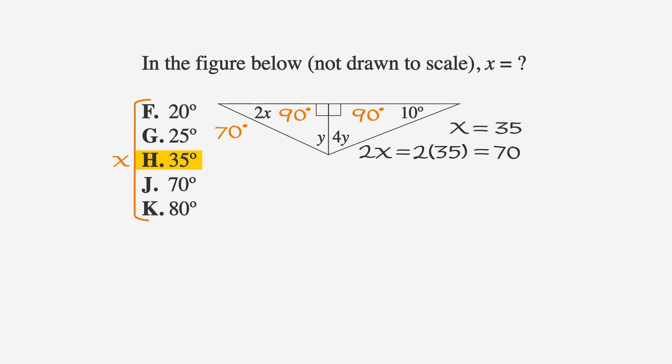Since the interior angles of the triangle have to equal 180, we can say that 70 plus 90 plus y equals 180, or 160 plus y equals 180. If we subtract 160 from both sides, we get that y equals 20.